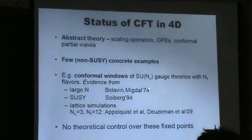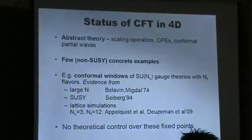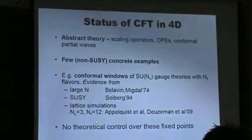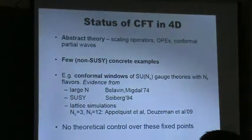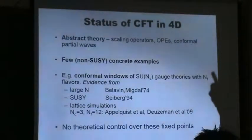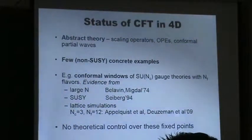Why do we know that? We have evidence from large-N expansions — discovered in a paper written a few months after the discovery of asymptotic freedom. We also have evidence from supersymmetric examples, and from lattice QCD simulations. In particular, for three colors and 12 fundamental flavors, lattice QCD people can show that the theory doesn't confine, so it flows to a strongly-interacting scale-invariant fixed point. The critical number of flavors is between 8 and 16.